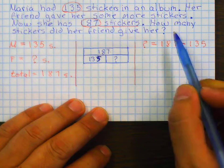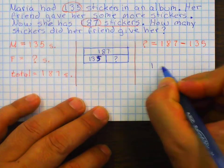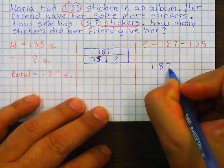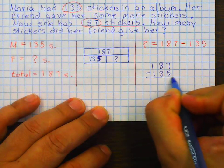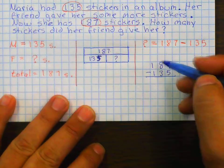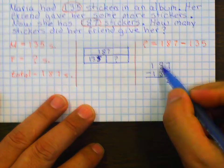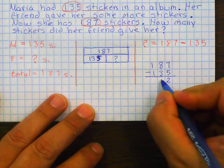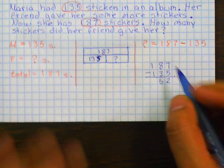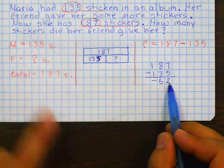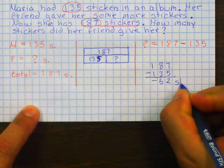So, again, like I said, when you add or subtract, your bigger number always goes first. So, I have 187, minus 135. Let's solve it. 7 minus 5? 2. 8 minus 3? 5. And 1 minus 1? 0. So, now I know that her friend gave her 52 stickers.